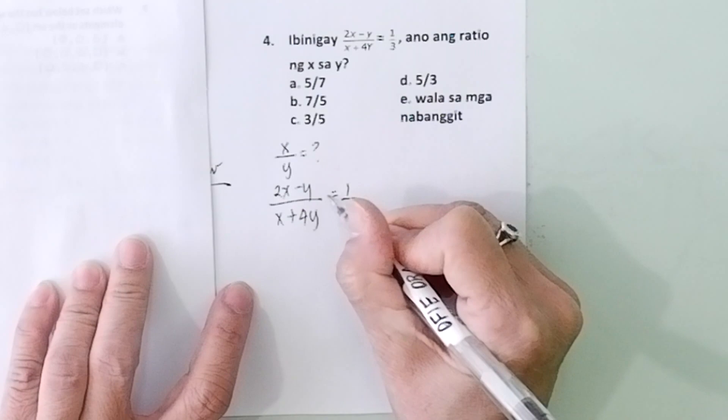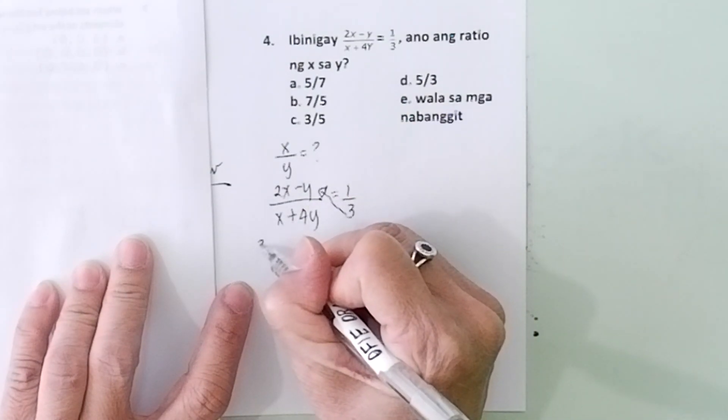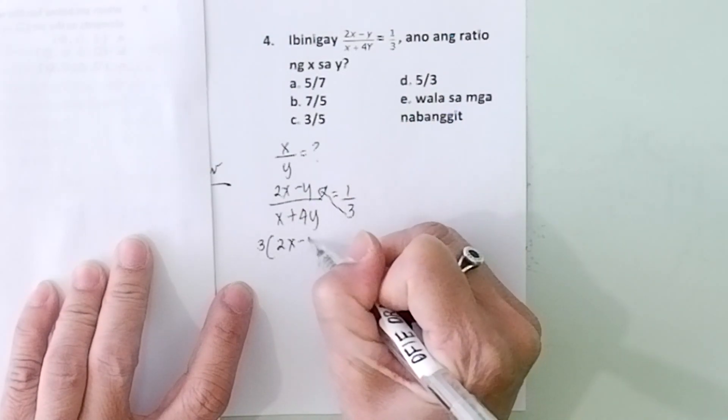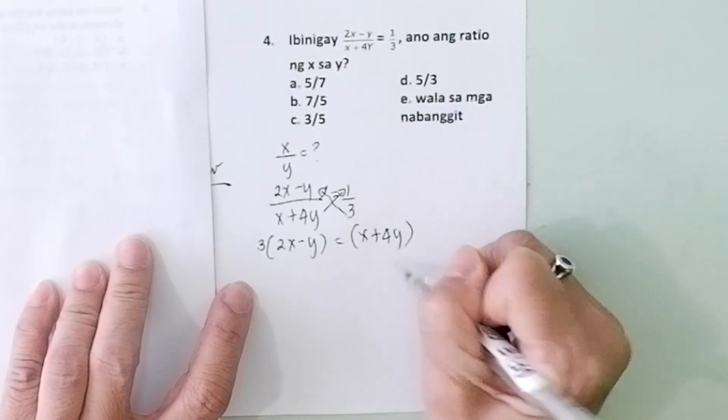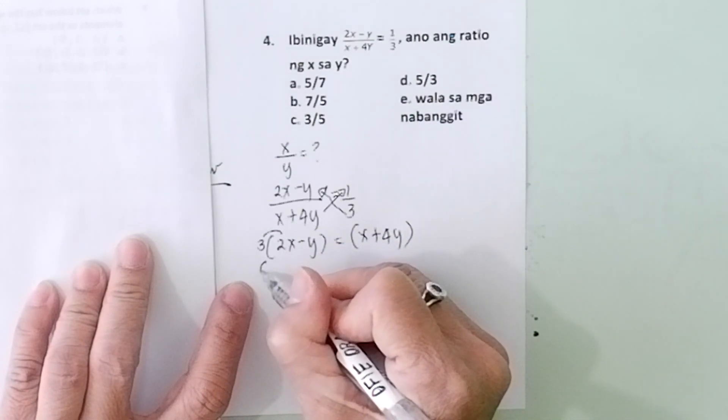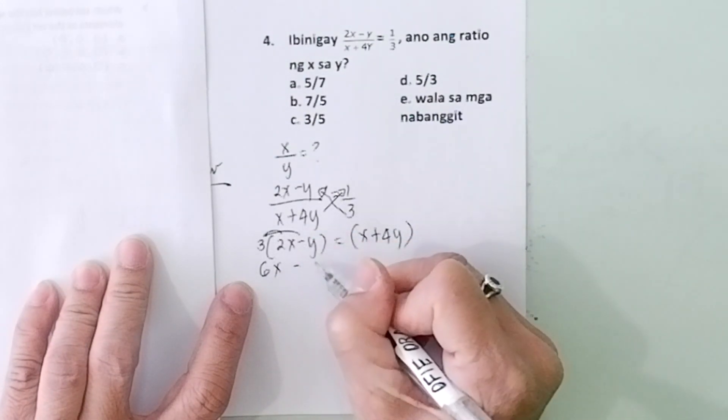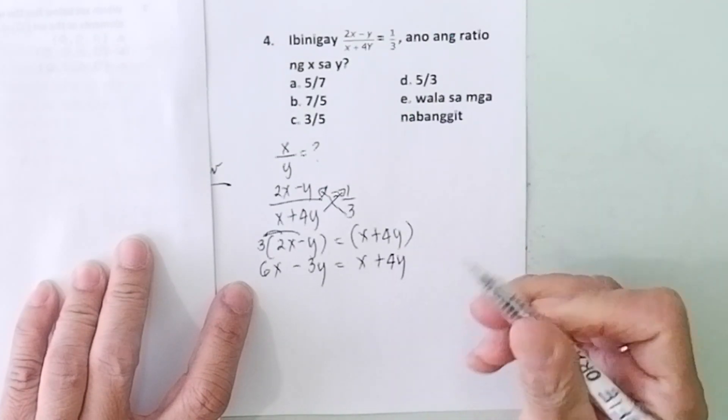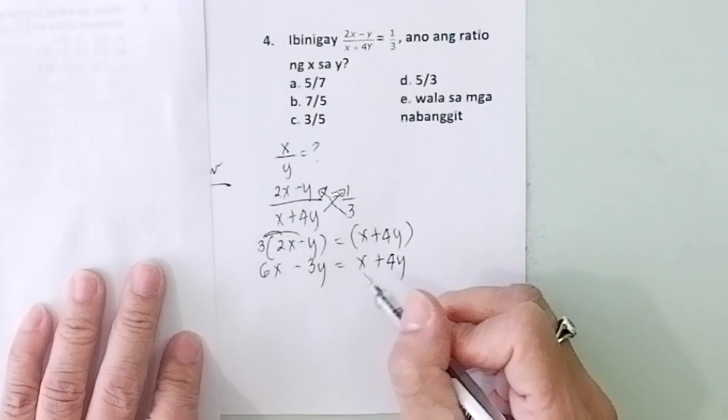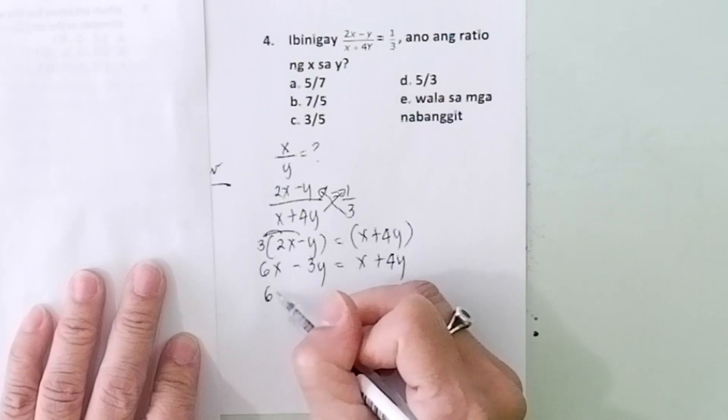Now you can take a shortcut here, cross multiply. So (2x - y)/(x + 4y) = 1/3. Multiply this with that, so you have here 3 quantity (2x - y) equals x + 4y. Now distribute, so that's 6x - 3y equals x + 4y.